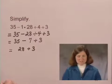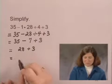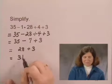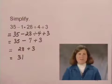I only have one operation left, the addition. 28 plus 3 is 31, and that is the simplified form of the beginning expression.